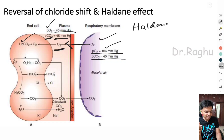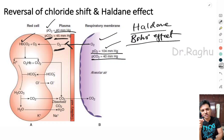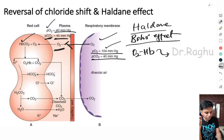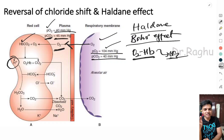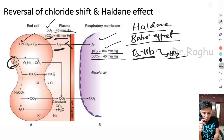As soon as oxygen binds with hemoglobin, the hemoglobin releases carbon dioxide — this is called the Haldane effect. This is analogous to the Bohr effect discussed in the transportation of oxygen video. Once oxygen binds, hemoglobin's affinity for CO2 is reduced and CO2 is released. Additionally, hemoglobin releases the H⁺ ions it was buffering, forming oxyhemoglobin.